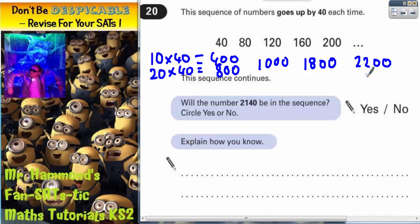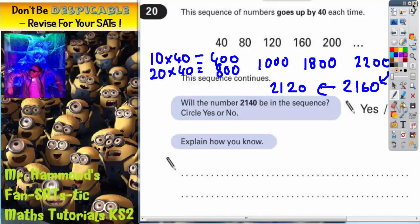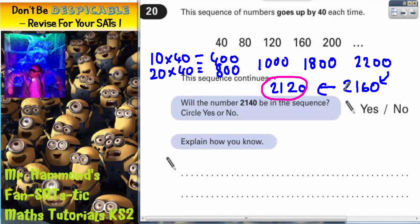But 2,200 have gone too far. So all I need to do now is count backwards by 40. If you come backwards by 40, the next one in the sequence would be 2,160. Backwards by another 40 would be 2,120. So 2,120 and 2,160 would definitely be in the sequence.